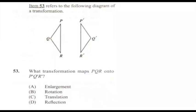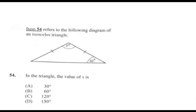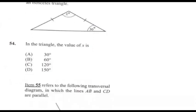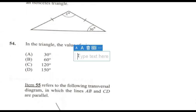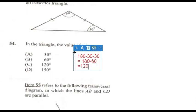Question 53: What transformation maps PQR onto the other diagram? It's a reflection — you can see it is a total flip of the original diagram. Question 54 refers to an isosceles triangle. In an isosceles triangle, two angles are equal. If one base angle is 30°, the other is also 30°. Total angles in a triangle are 180°, so x = 180 − 30 − 30 = 120°. Answer for 54 is C.